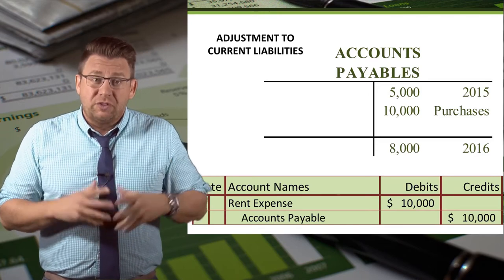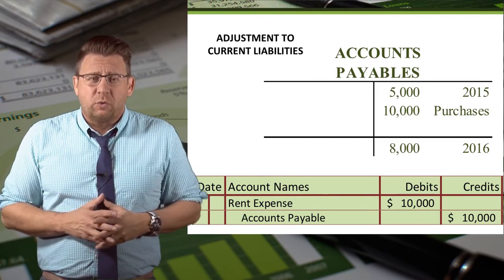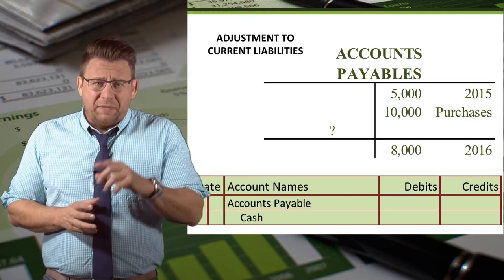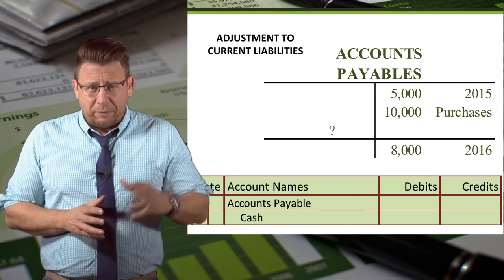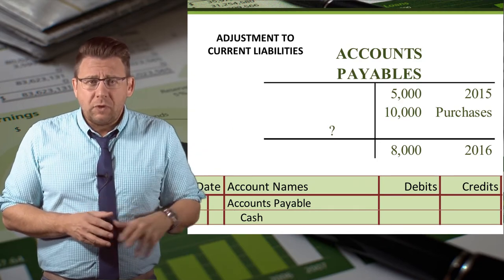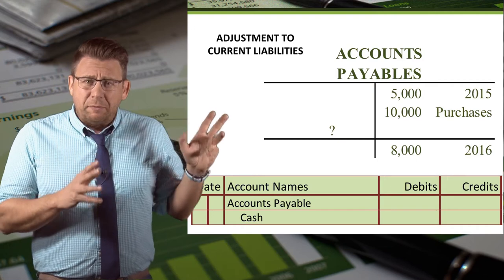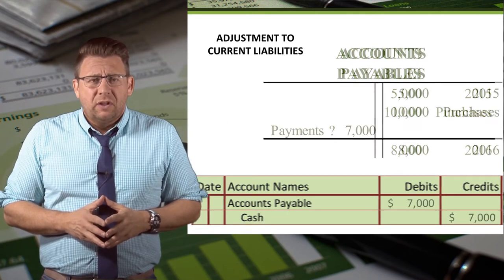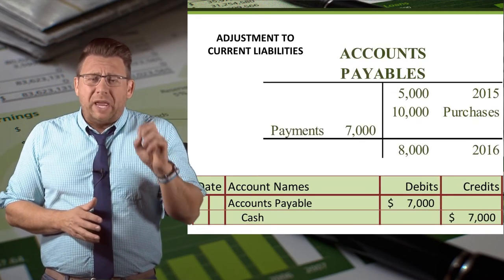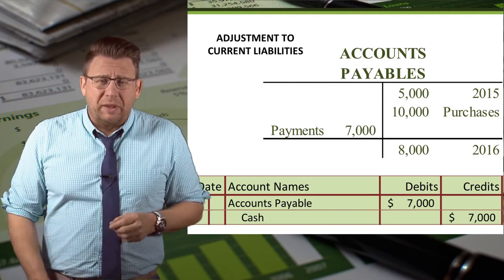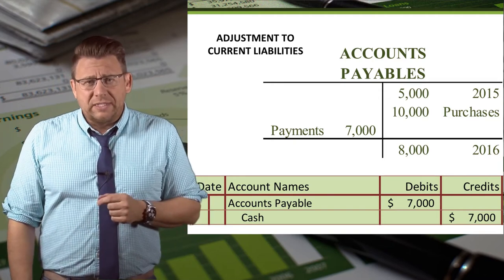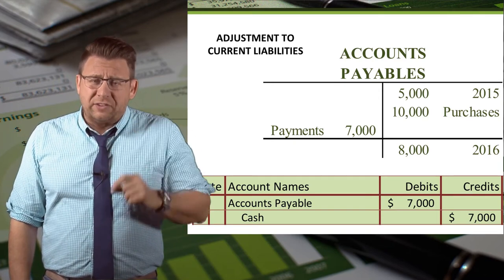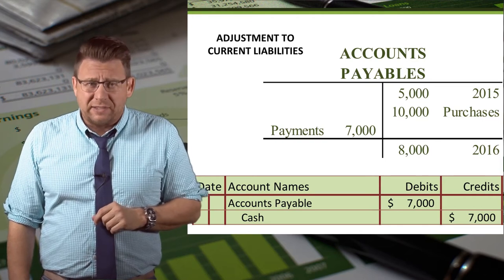It doesn't really matter what amount you use — the math is going to work out. When we make the payment on the account, we debit accounts payable. So what amount do we need to make this T-account balance? We need payments of $7,000 to make the account balance.